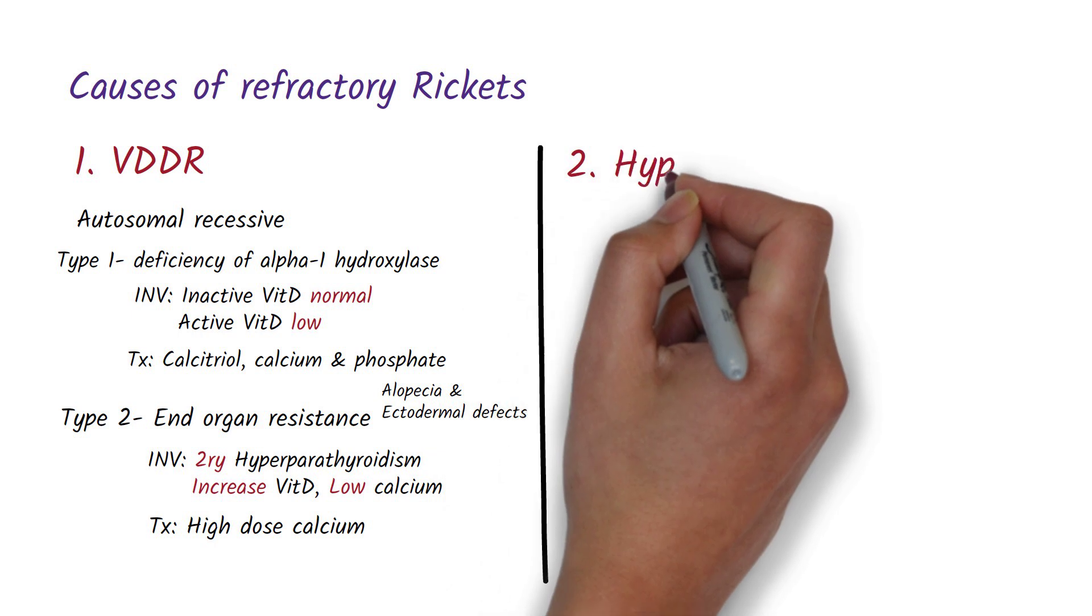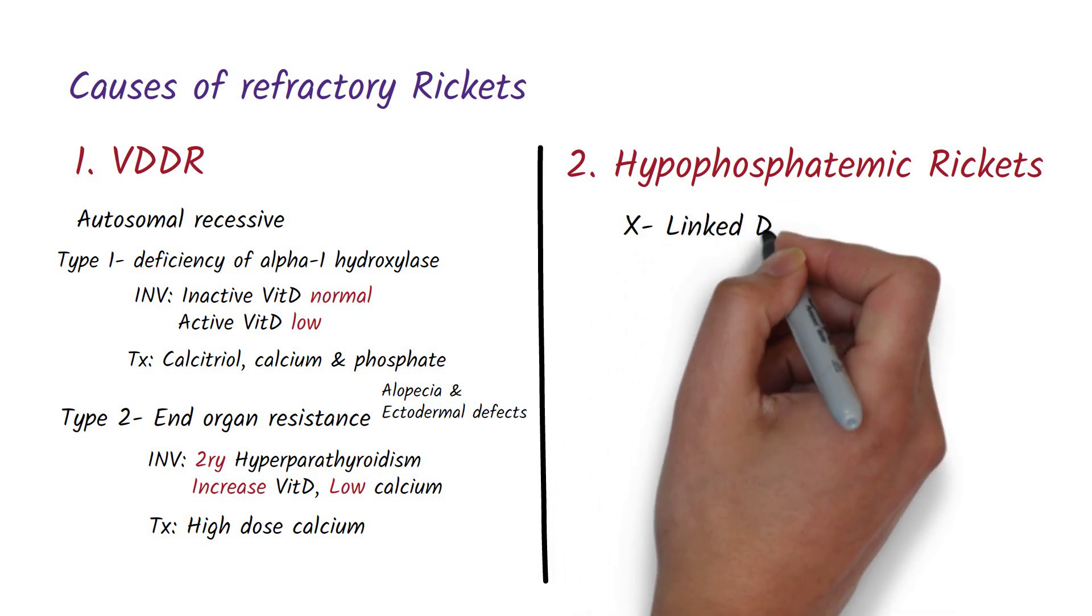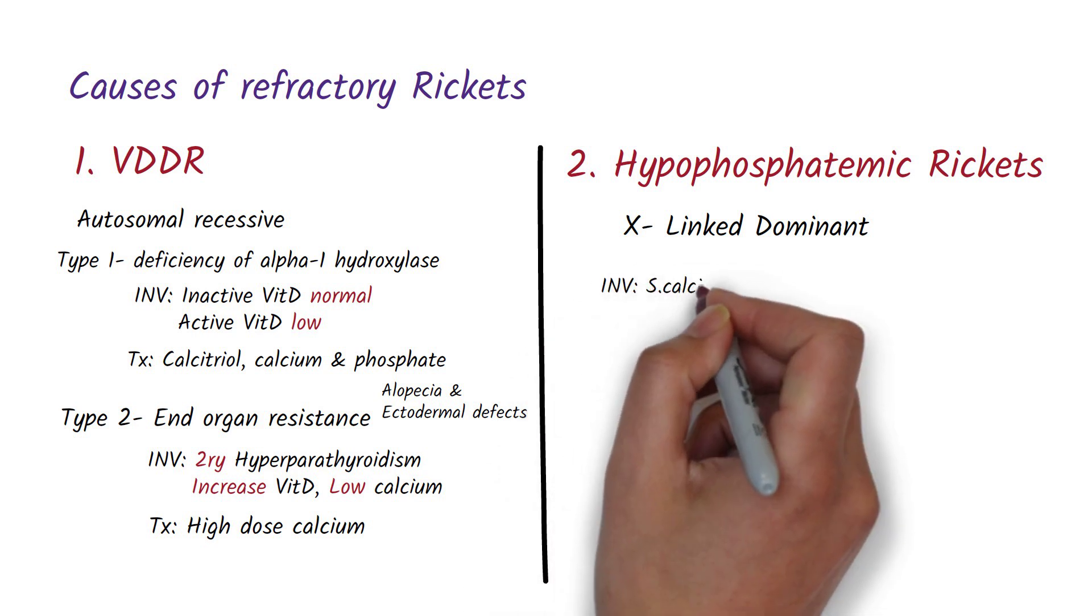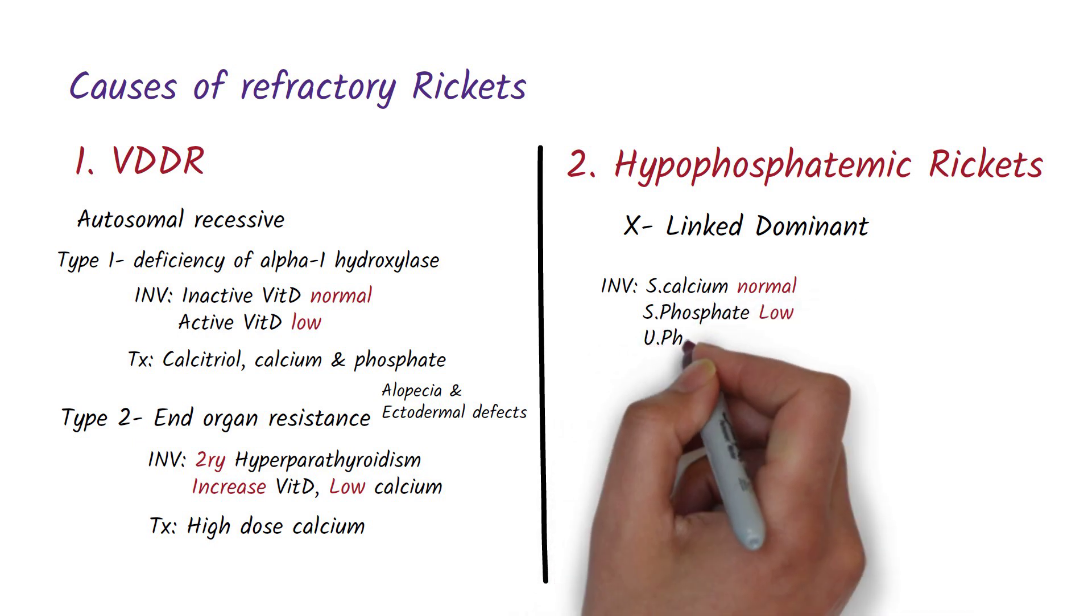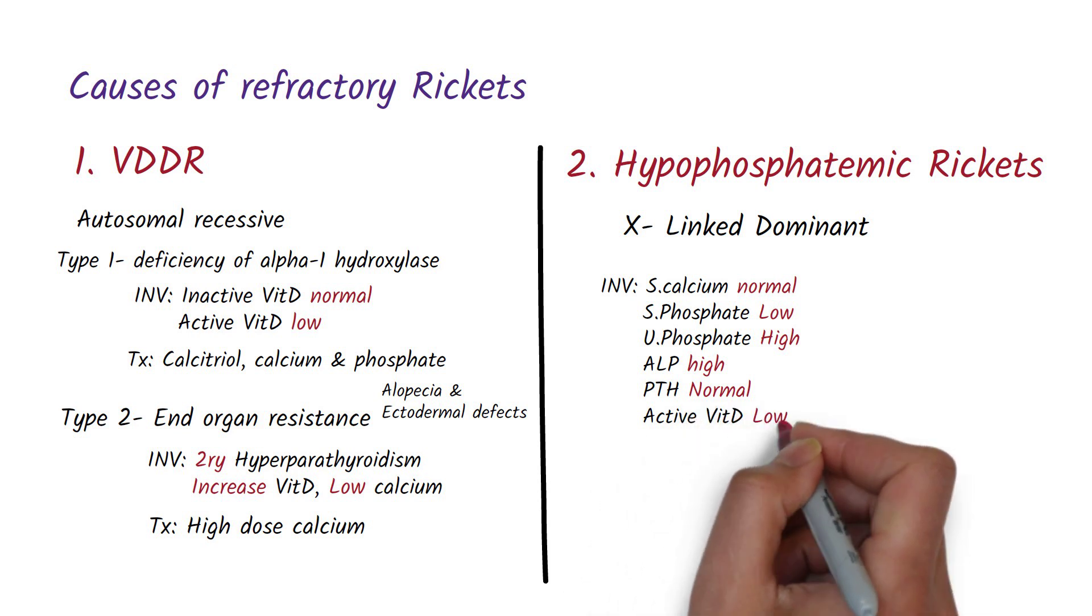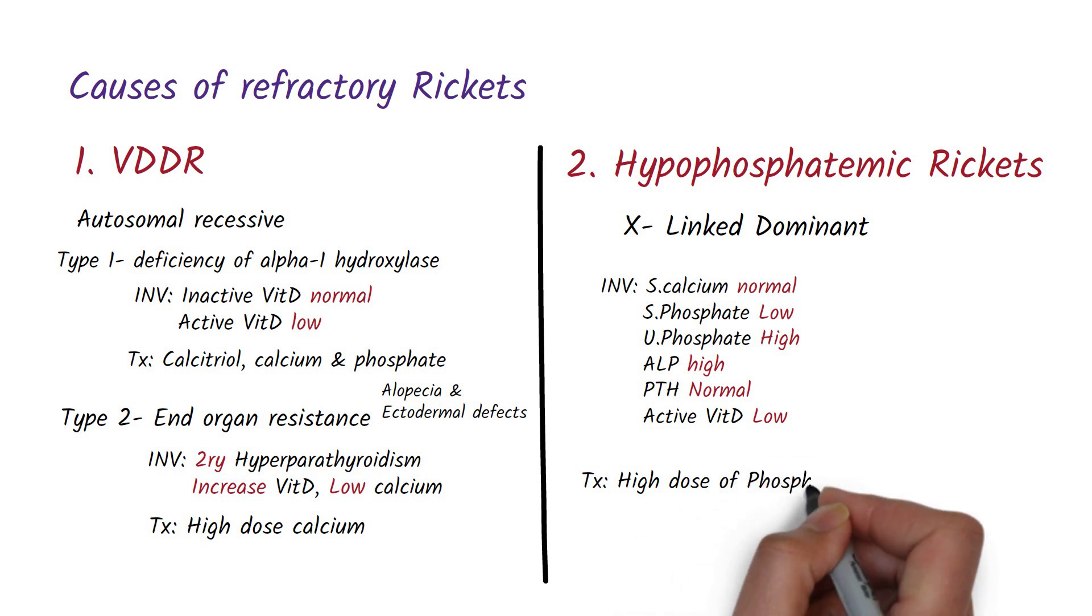Another cause of refractory rickets is hyperphosphatemic rickets. Hyperphosphatemic rickets is an X-linked dominant condition where there is a defect in the renal phosphate transport. In the investigation, the serum calcium levels will be normal or mildly decreased and serum phosphate levels will be low, but urine phosphate levels will be high. Alkaline phosphatase will be increased but parathyroid hormone levels are normal because serum calcium levels are mostly normal, only mildly decreased. And the active form of vitamin D is inappropriately low for the serum phosphate. Treatment of hypophosphatemic rickets is with high doses of phosphate and vitamin D3 which is calcitriol.